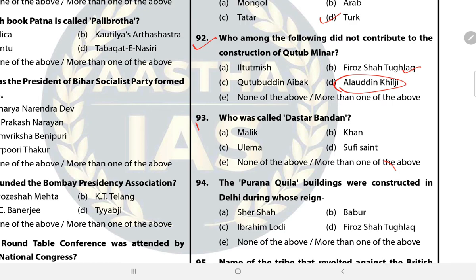Question 93: Who was called Dastar Bandhan? The answer is C — Ulema. In the Sultanate period, people sitting in high religious and judicial positions — Ulema — were called Dastar Bandhan, as they officially wore turbans on their heads.